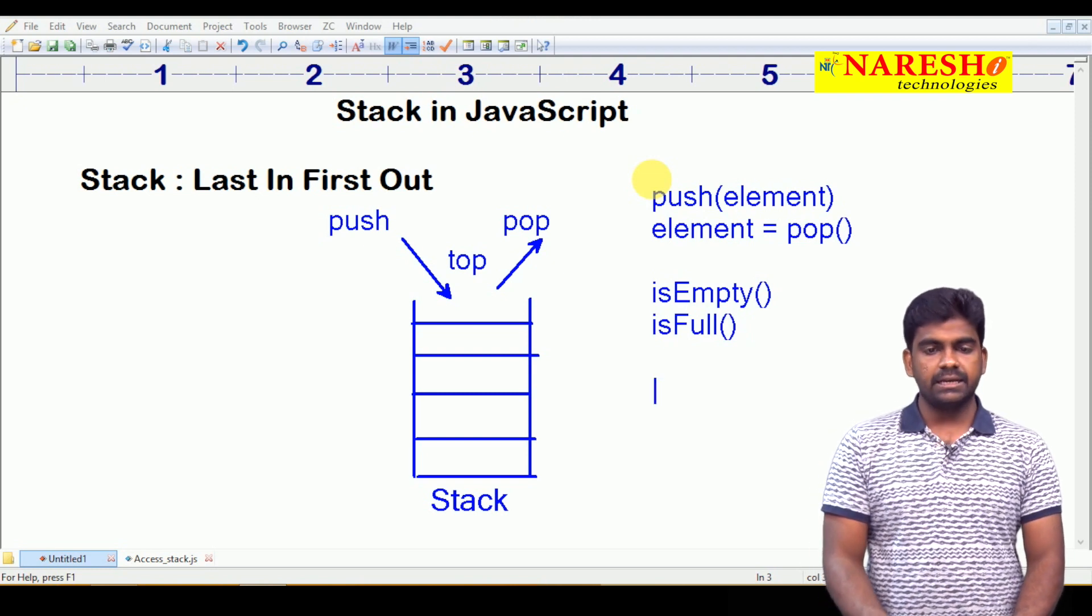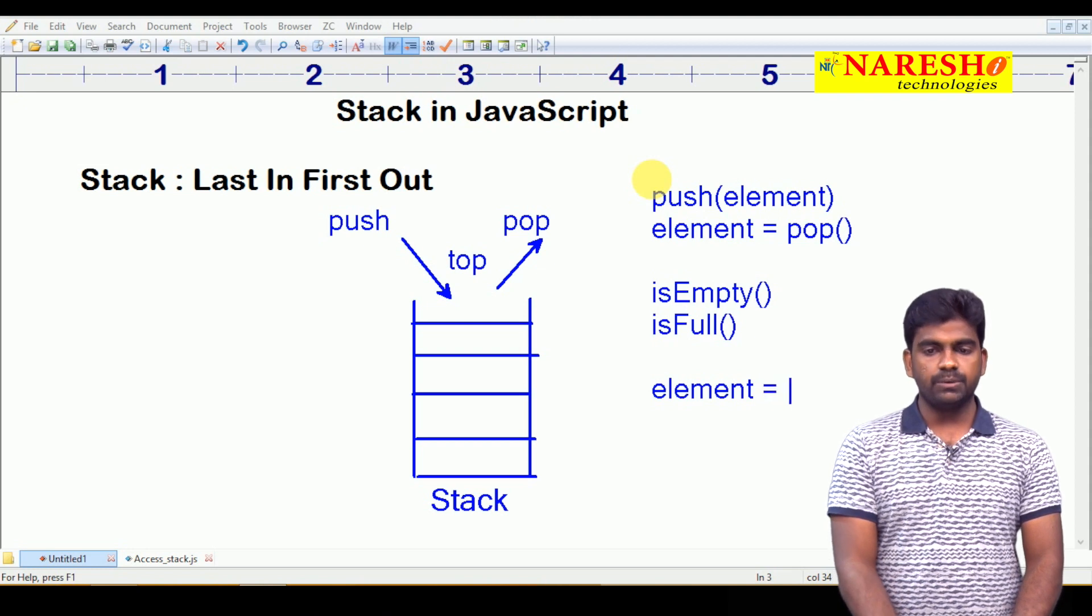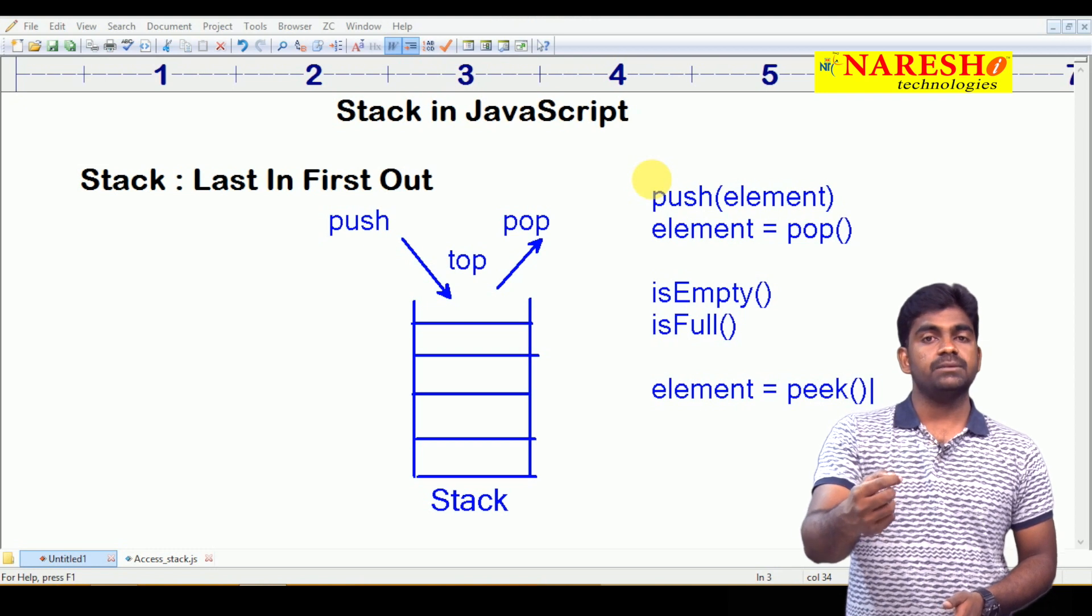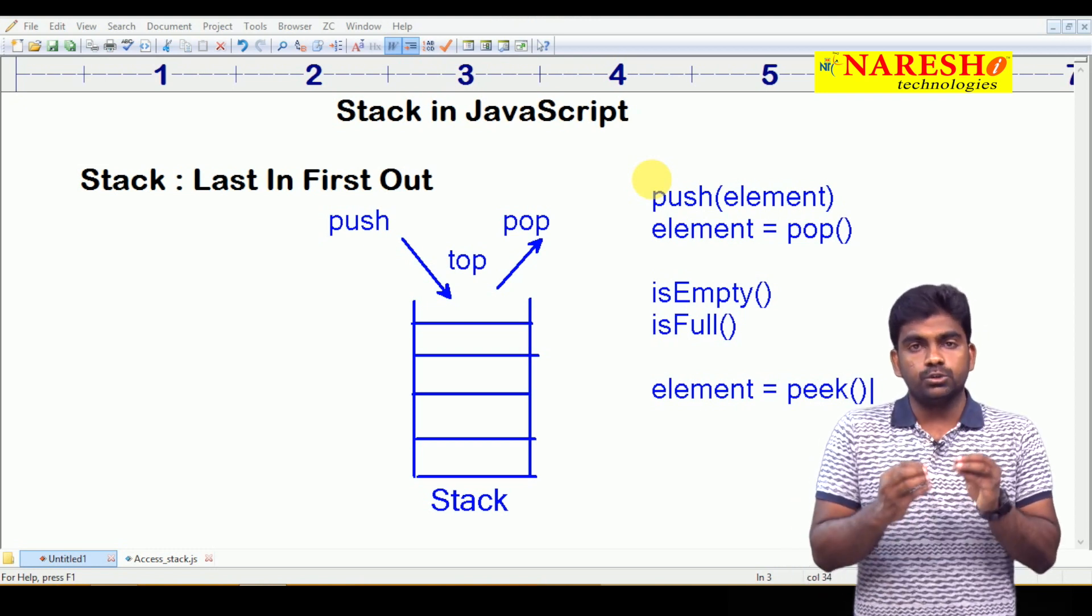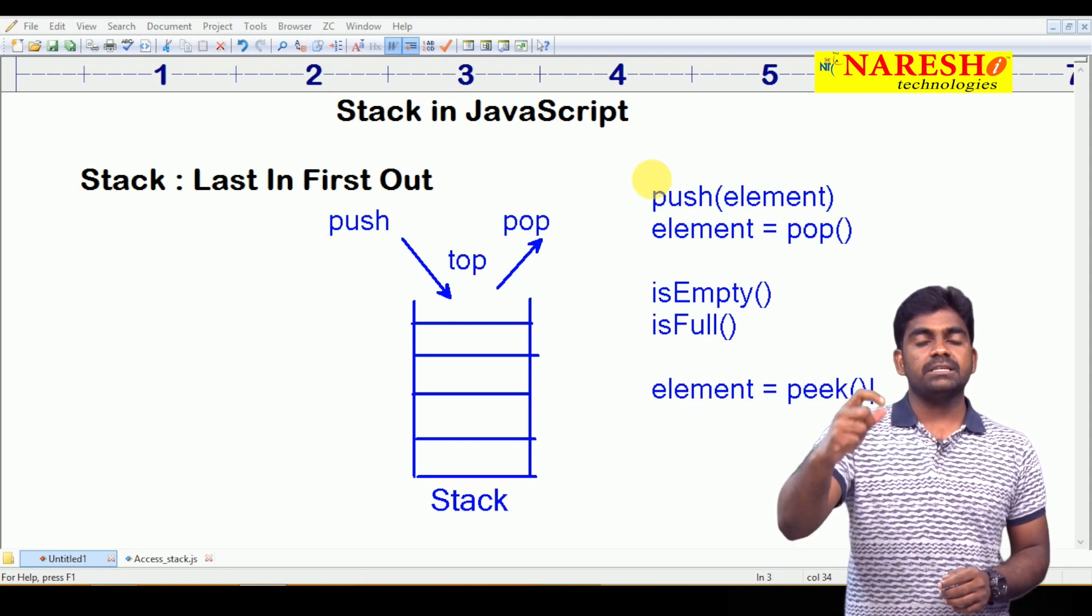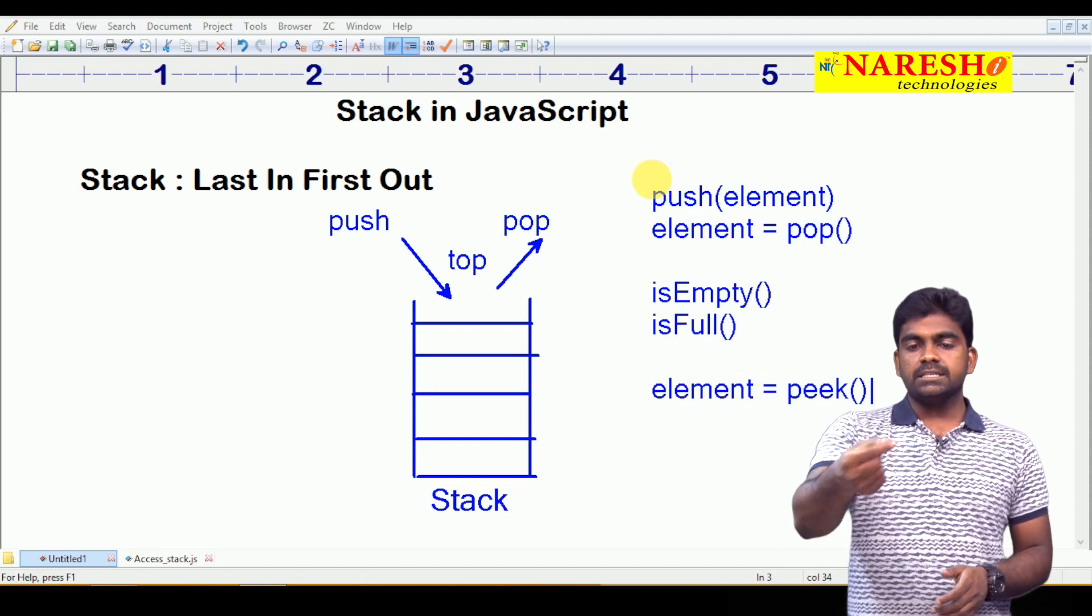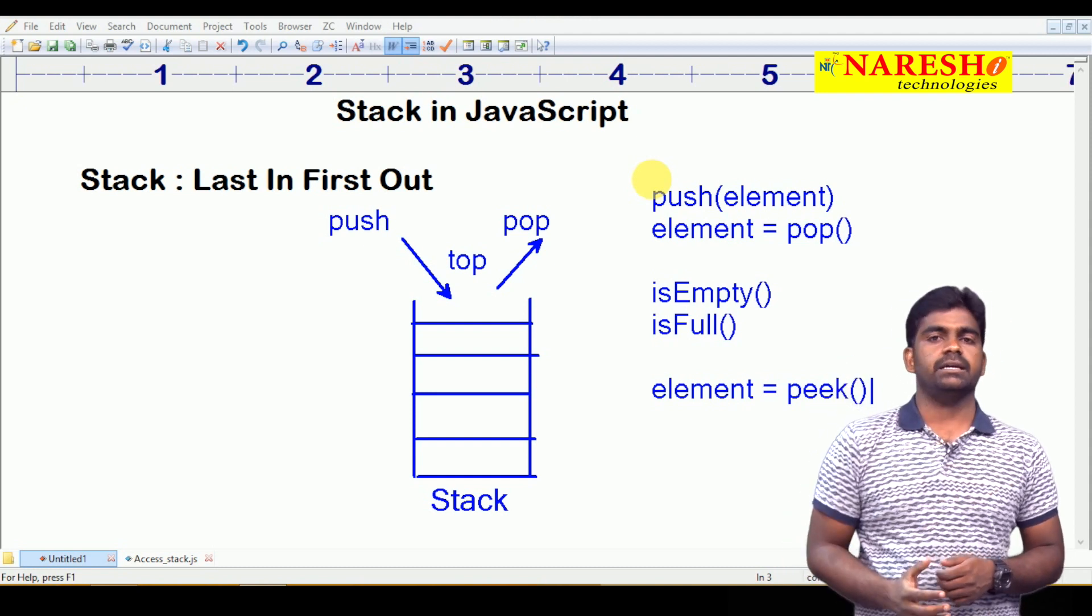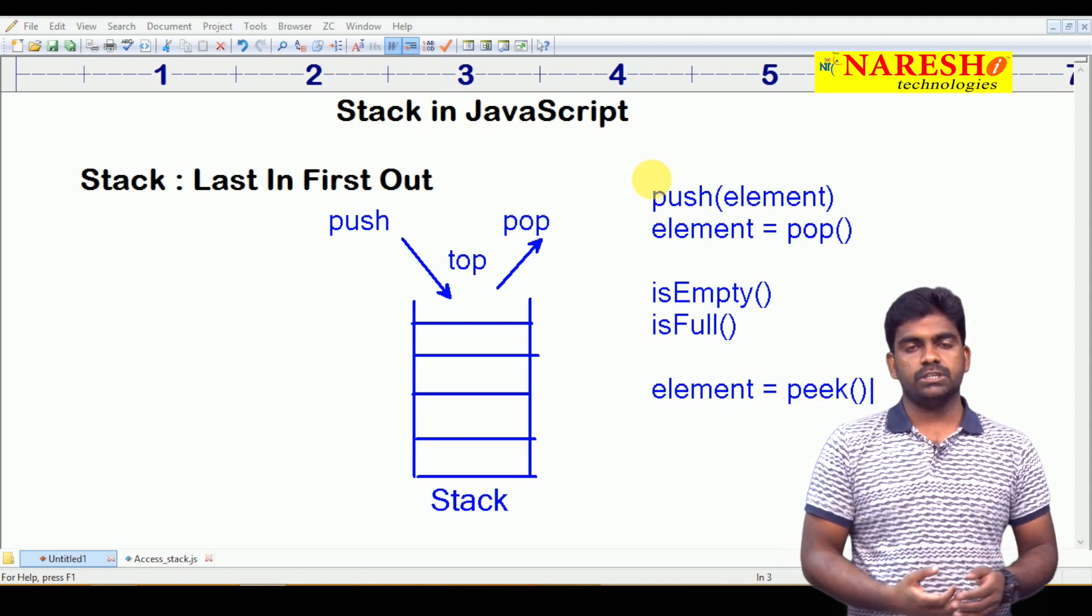Here it is like a traverse, like a peek function we are taking. What is the difference between a peek function and pop function? Peek function means it returns the top element, but the element will not be removed. Just to check what is the element present at the top of the stack, that is peek. Pop function will remove the element and return the element. The top element will be removed and that will be returned.